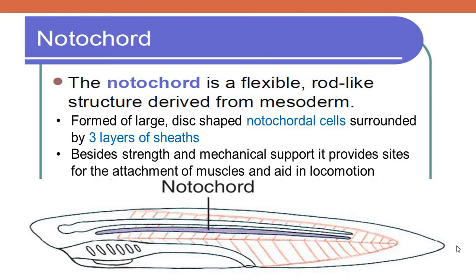So what is a notochord? The notochord is a flexible rod-like structure that is derived from the mesoderm. Mesoderm is one of the three germinal layers of higher organisms — the three germinal layers are ectoderm, mesoderm, and endoderm. Most of the internal organs are derived from the mesoderm. So the notochord is also derived from the mesoderm, and it is a flexible rod-like backbone.